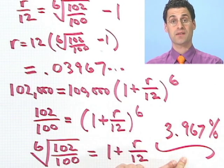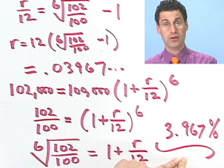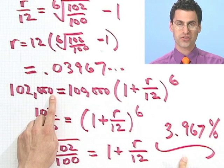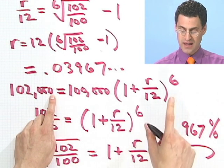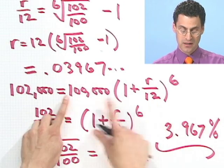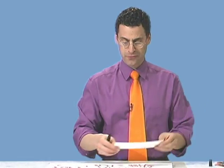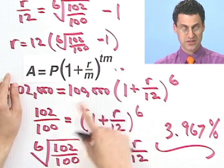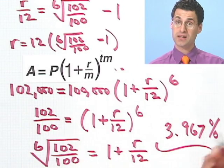So that's the rate that the bank would have to pay you in order for you to have $102,000 at the end of a half a year compounding monthly if you invest $100,000. So you can start to see how to use this type of formula to actually resolve questions about interest rates and investments.